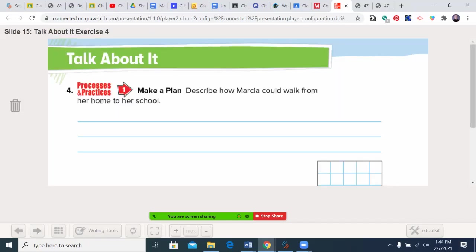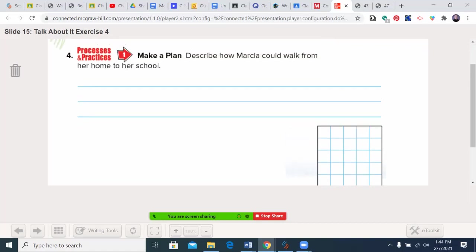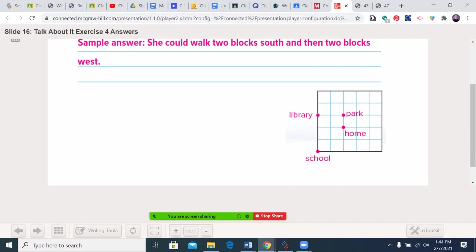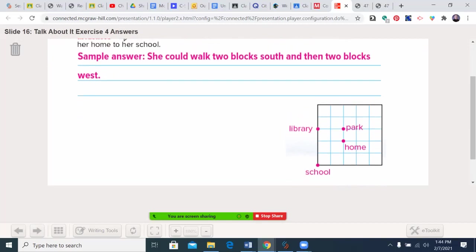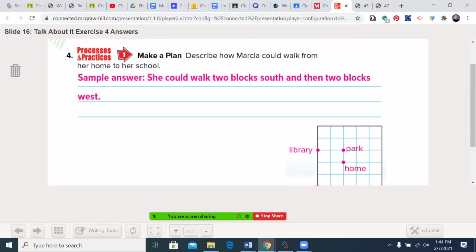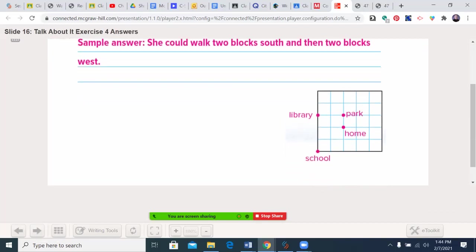Describe how Marcia could walk from her home to school. She could—you have a couple ways. You could say she could walk two blocks south and then two blocks west, or you could say she could walk two blocks west and then two blocks south. Either would work. So you can write down that sample answer or the other version.